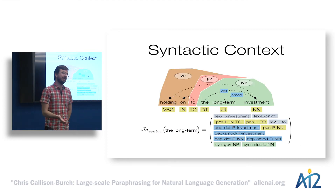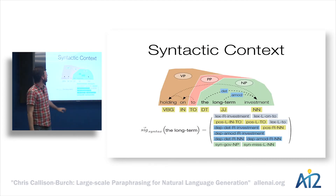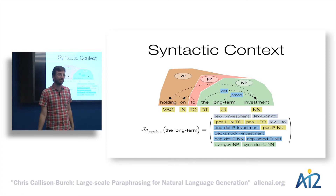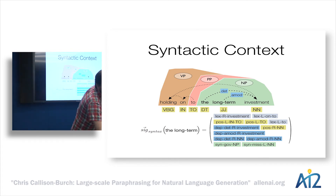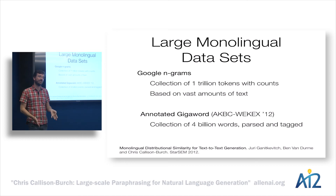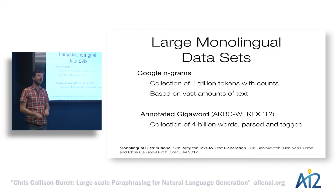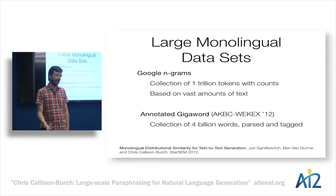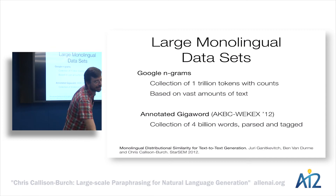We can look at syntactic similarity using dependency parses or other syntactic features analyzed from a large volume of monolingual texts. For our experiments, we calculate n-gram similarity using Google n-grams, which is based on a trillion words of data. One of my students also automatically parsed all of the Gigaword corpus, creating an automatically annotated dataset of about 4 billion words of automatically parsed data from which we can calculate syntactic similarities.